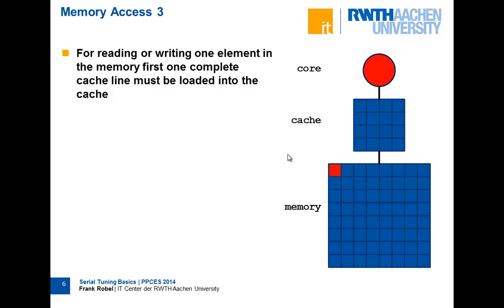I have a really easy model of a serial system. You have one core — modern processors have more, but it's serial tuning, so one core is enough. We have the cache — in this model I have four cache lines — and the main memory. Modern processors have multiple levels of cache, but for understanding why cache and the way of accessing memory is so important, you can see this in this model.